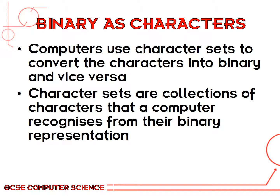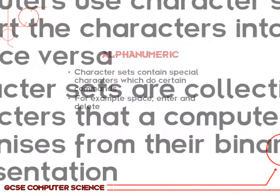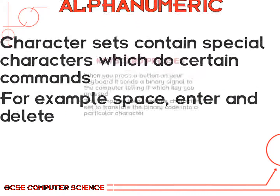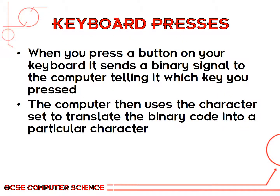Character sets are collections of characters that a computer recognises from their binary representation — imagine a big index of loads of different symbols with a binary value next to them. These character sets will literally have all the possible characters available with their corresponding decimal value, and then the conversion into whatever the binary representation is. The character sets also contain special characters, for example space bar, enter, and delete. When you press a button on your keyboard it sends a binary signal to the computer telling it which key you pressed, and the computer then uses the character set to translate the binary code into a particular character.